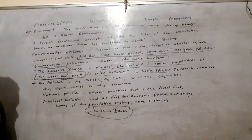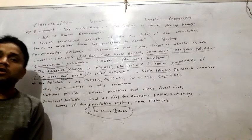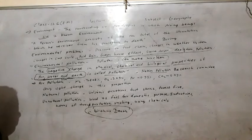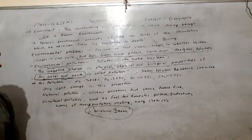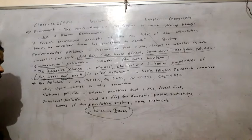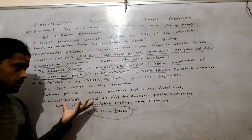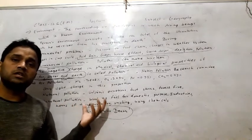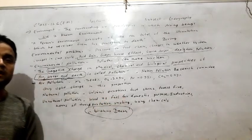For unnatural pollution, the human spreads pollution. Sources include: wood used as fuel for domestic purposes, industrial activities, means of transportation, smoking, and using chemicals. All these are responsible for air pollution, and here the main role is played by humans.